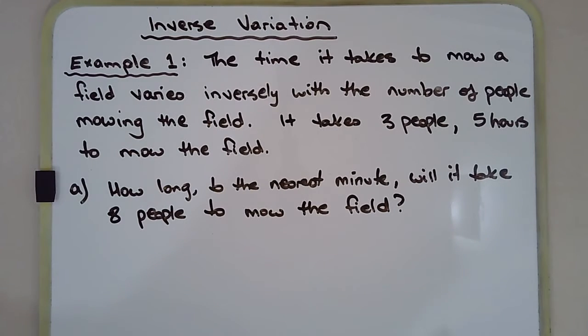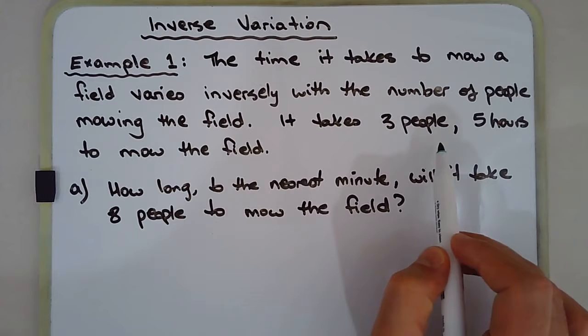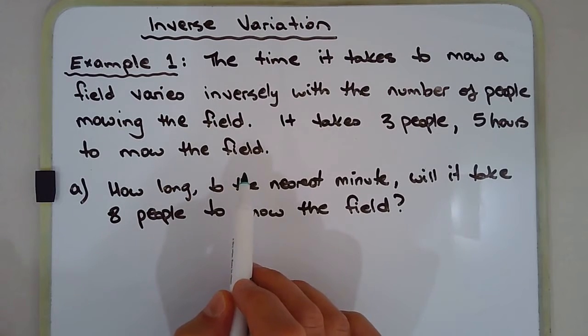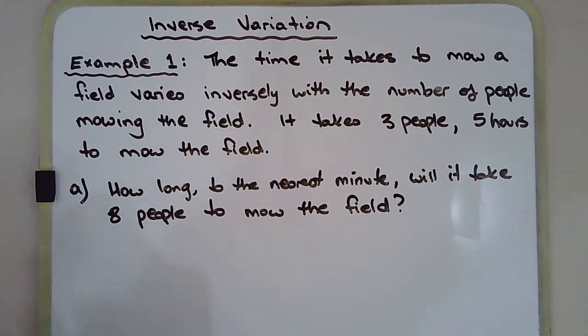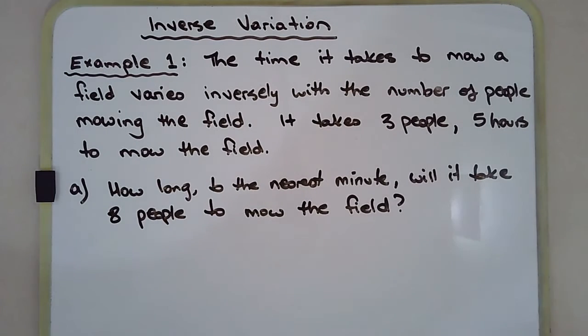So in this particular example, it takes three people five hours to mow the field. So logic will tell you then that if you double the number of people, say if you put six people on the job, it should take two and a half hours in theory.